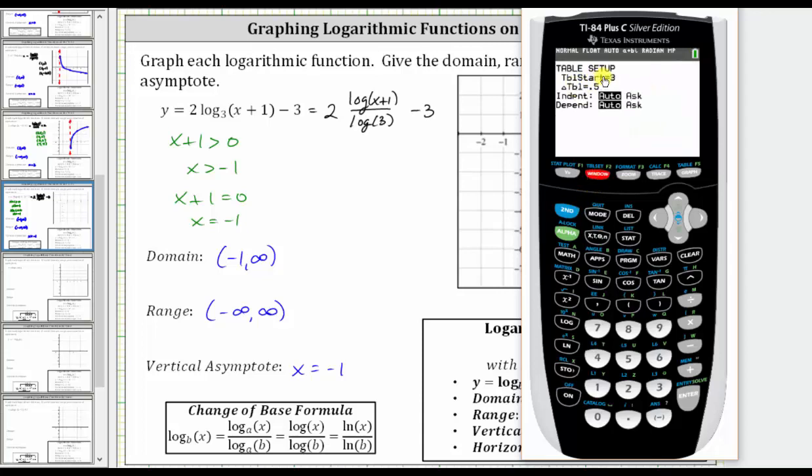Right now the table starts at three, because the domain is x greater than negative one. Let's start the table at negative one, enter. Let's have the change in table be 0.5, which it is, and the independent and dependent variables on automatic, which they are. So now we press second graph to go to the table.